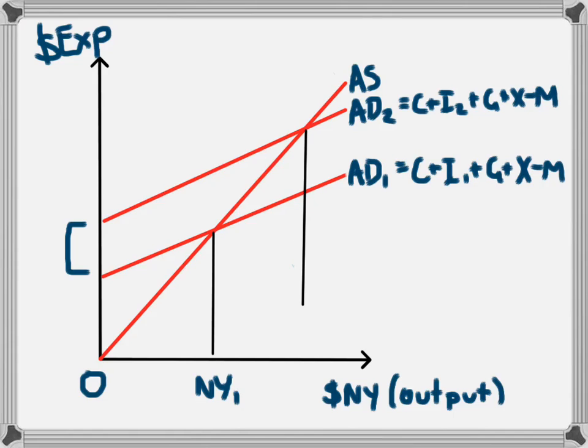The expansionary monetary policy increases aggregate demand from AD₁ to AD₂, leading to an increase in national income from NY₁ to NY₂. The increase in investment is smaller than the increase in national income because the investment increase is multiplied through the economy via the multiplier effect.